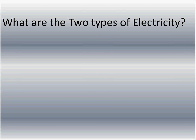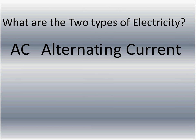So the question is, what are the two types of electricity that we use? They are AC, which means alternating current, and DC, which means direct current.